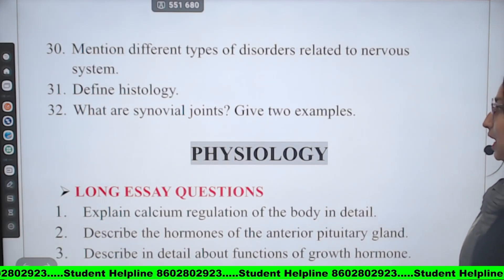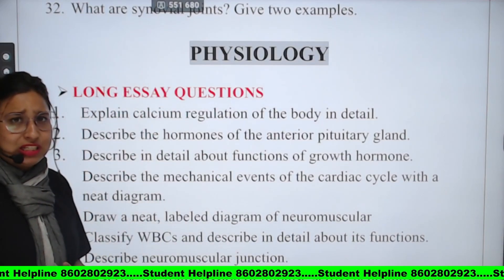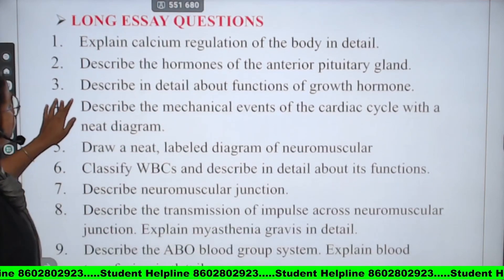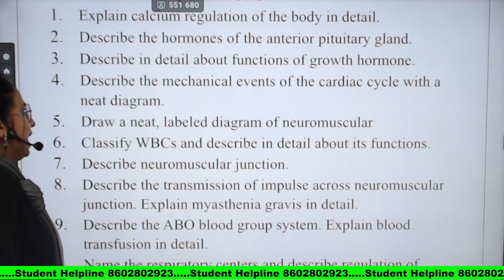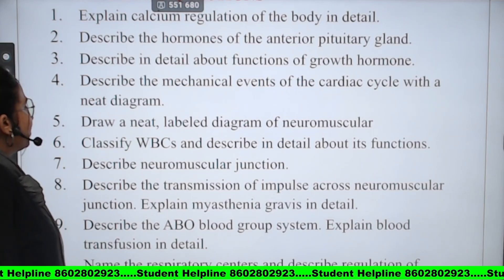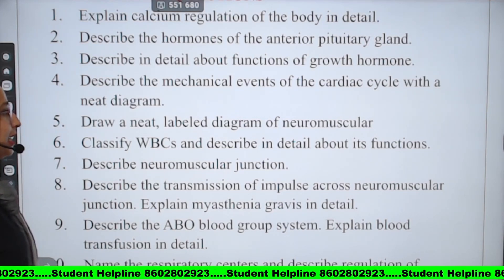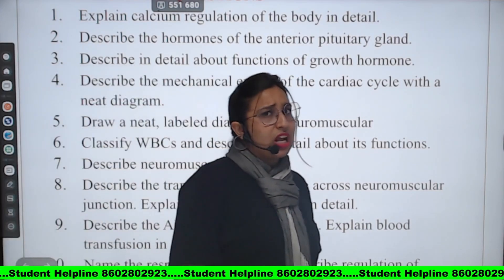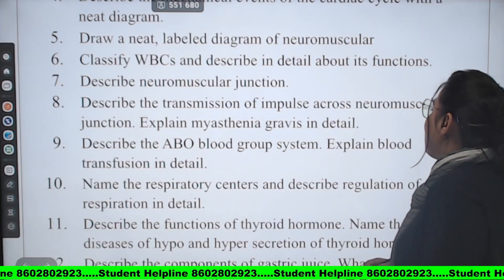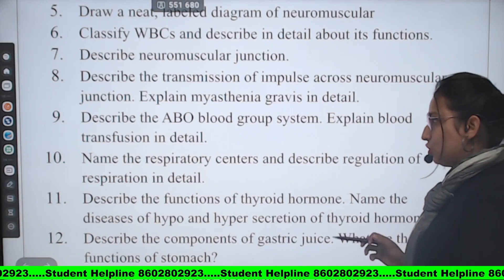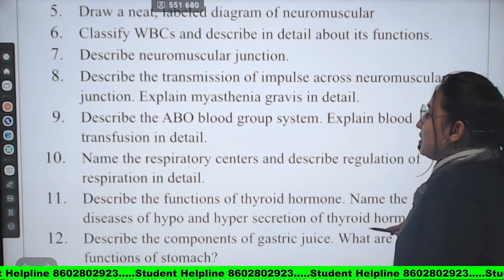Now we will look at the physiology long questions. First: Explain calcium regulation of the body in detail. Second: Describe the hormones of the anterior pituitary gland. Third: Describe in detail the functions of growth hormone. Fourth: Describe the mechanical events of the cardiac cycle with a neat diagram. Fifth: Draw a neat labelled diagram of the neuromuscular junction. Sixth: Classify WBCs and describe in detail their functions. Seventh: Describe the neuromuscular junction.